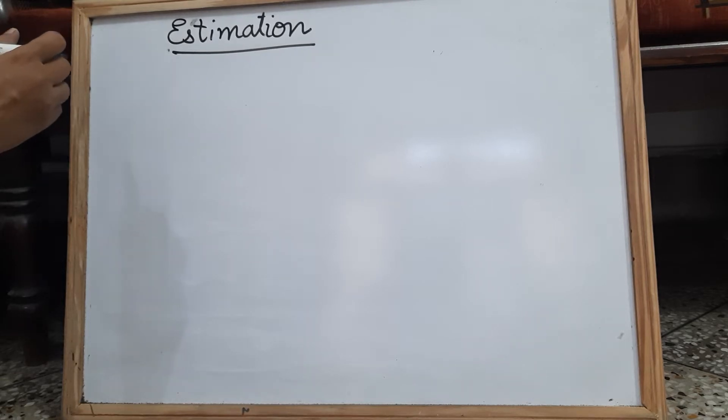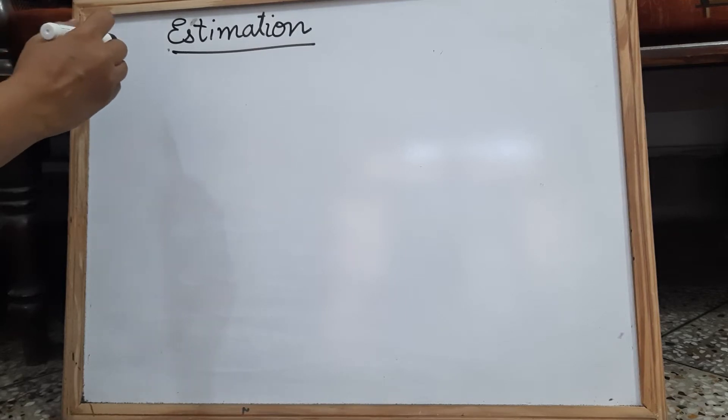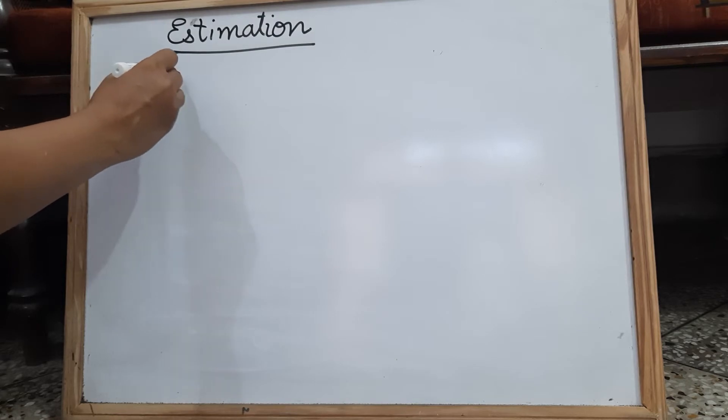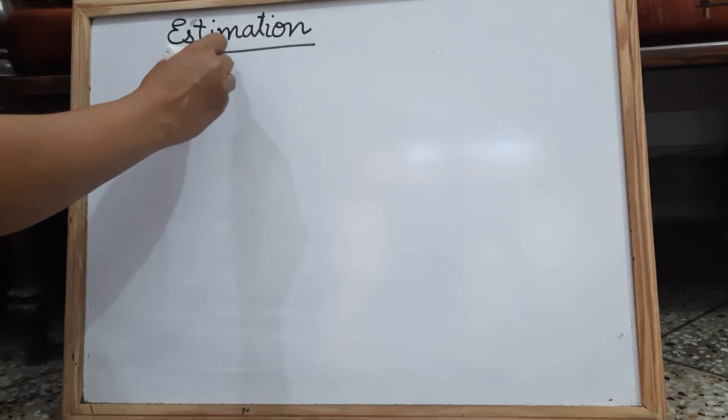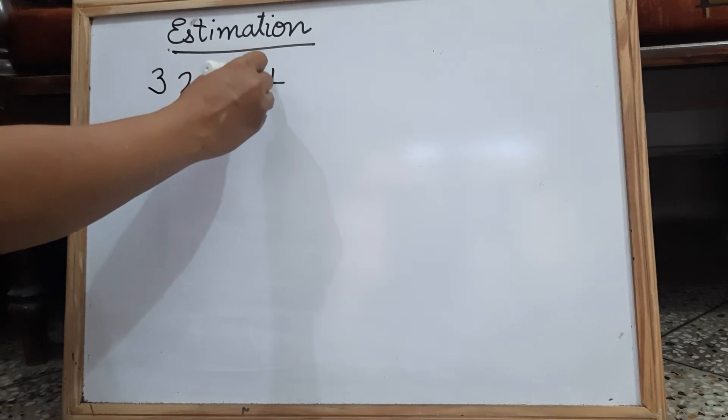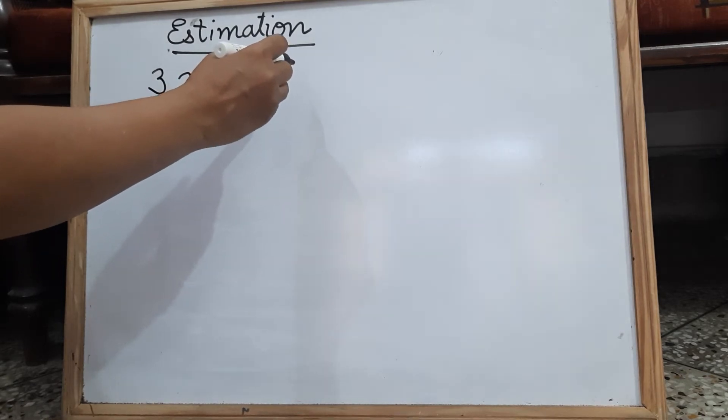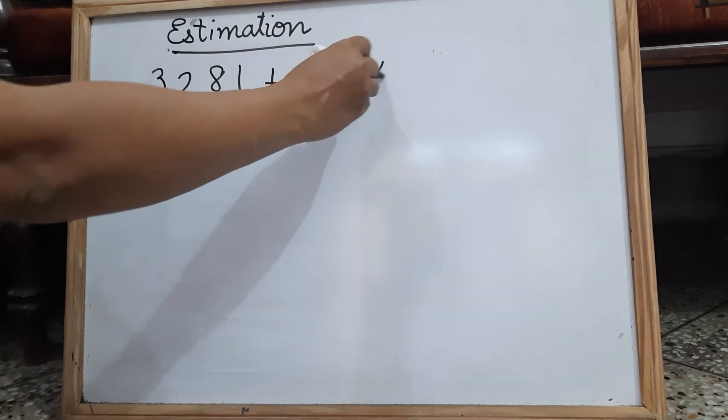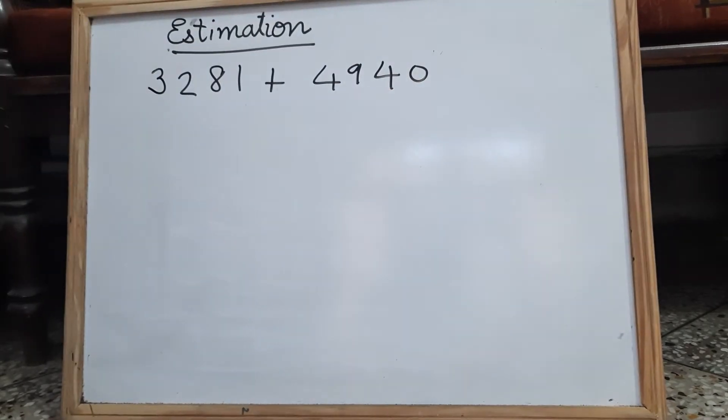So let us take one number, say 3,281, we have to add this number to 4,940. So first let us find the actual sum.